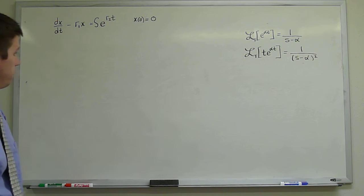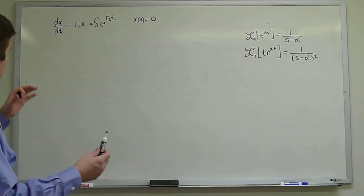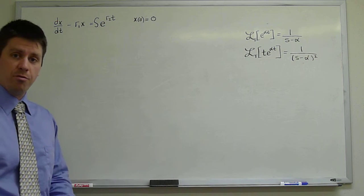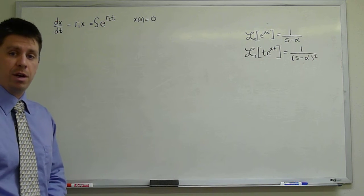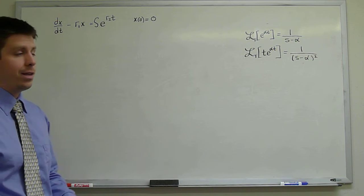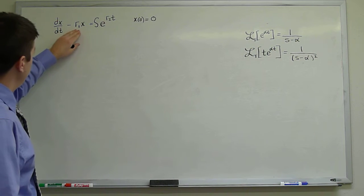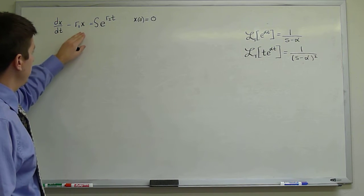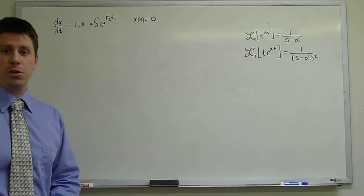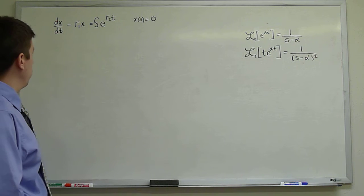As we saw, the method consists of several parts. We first have to verify that this is in fact a constant coefficient ODE. Here R1 is just a constant multiplying the x term, so it is constant coefficient. The method will work.